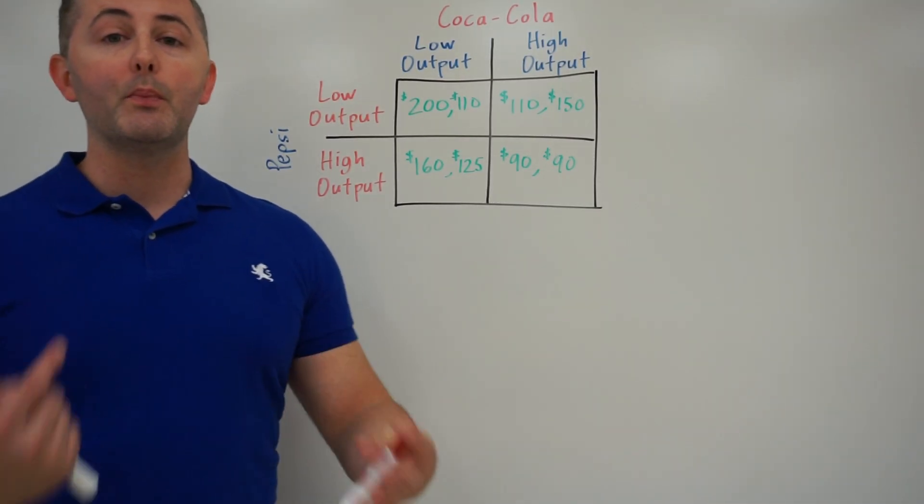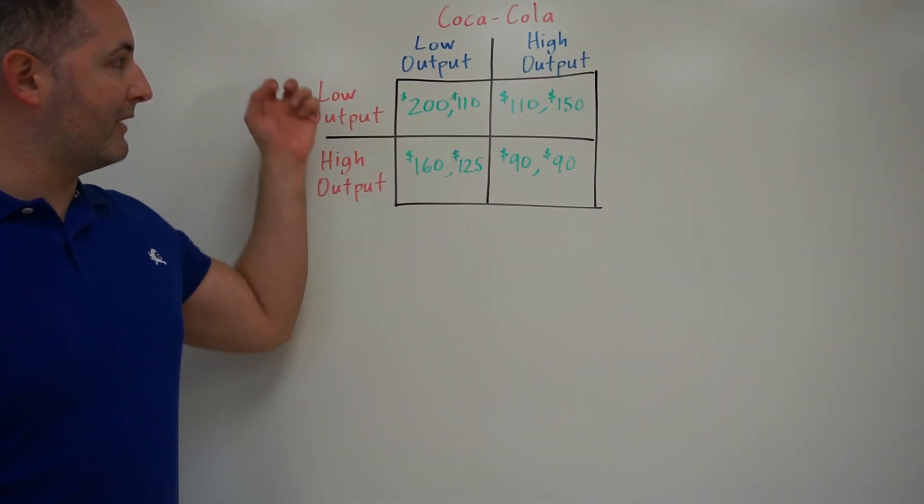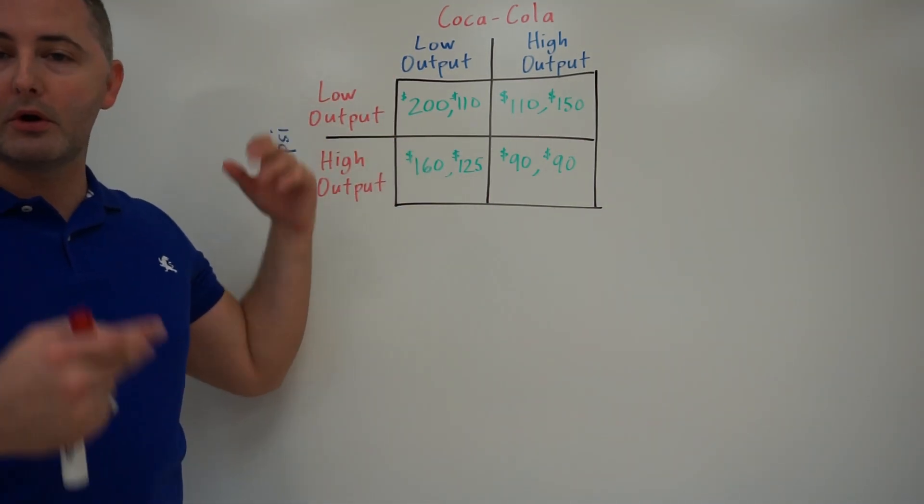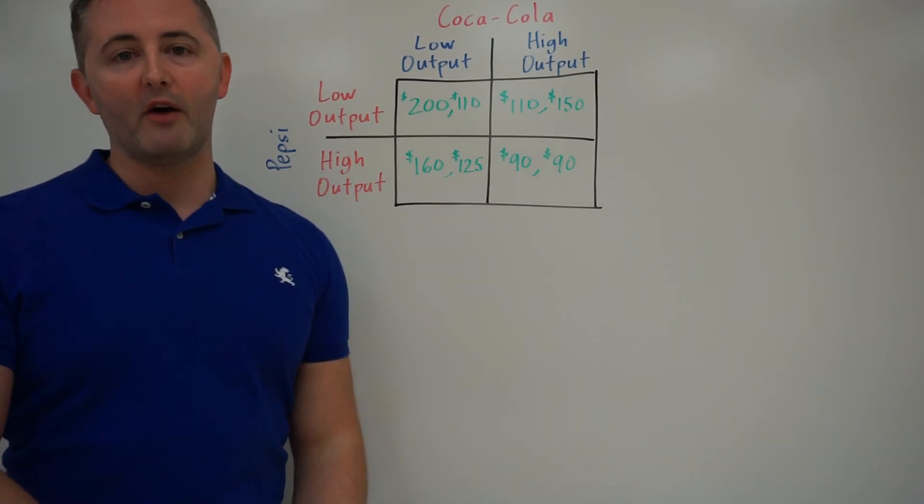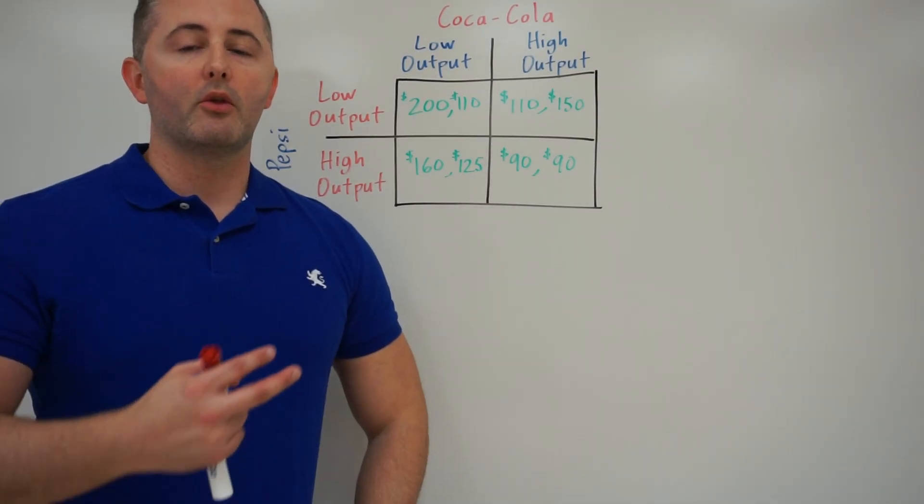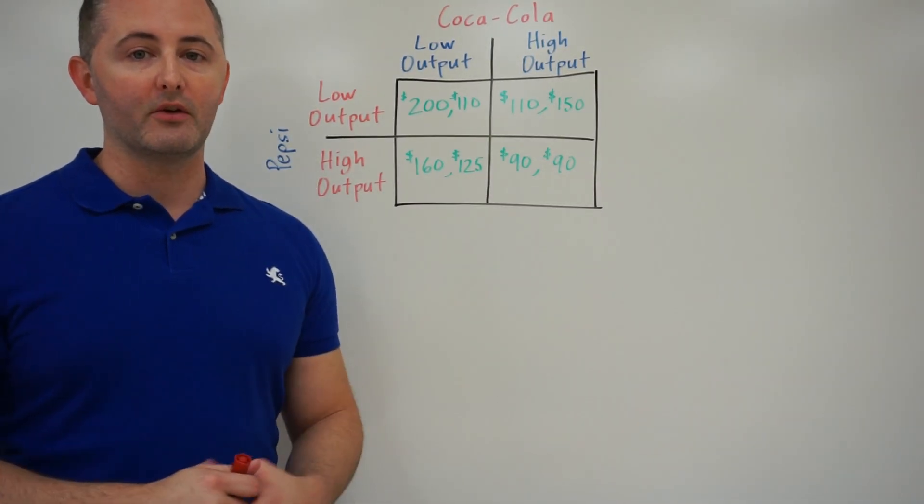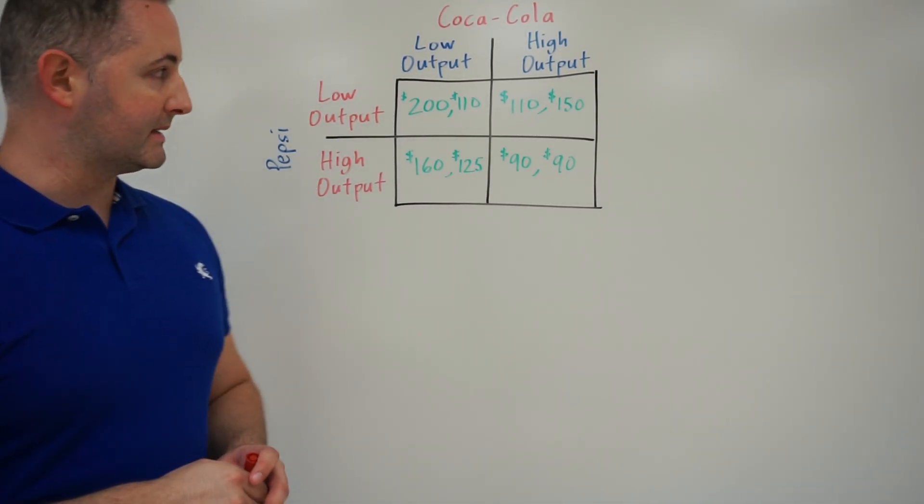Remember that they are interdependent, meaning that the production level... they have two options of either producing a low output or a high output, and whatever they choose is going to influence the profits of the other. So in other words, that interdependence showing that their actions affect the other, so they're not in an isolated way.